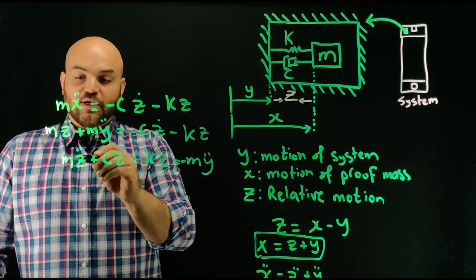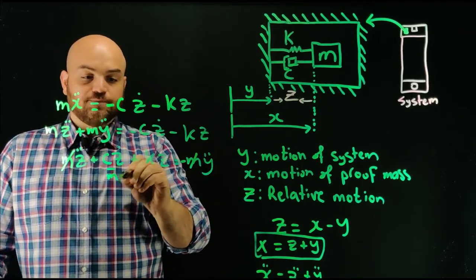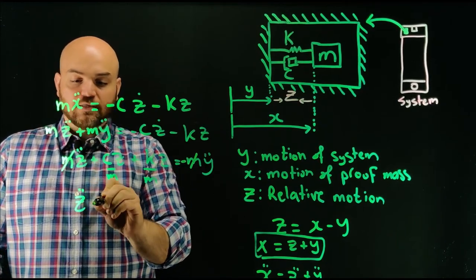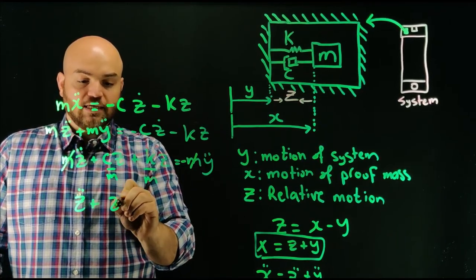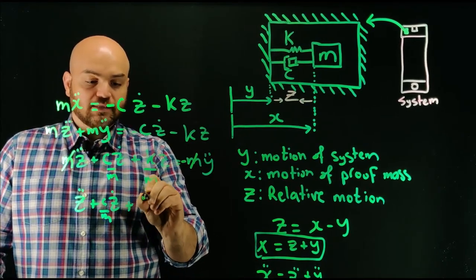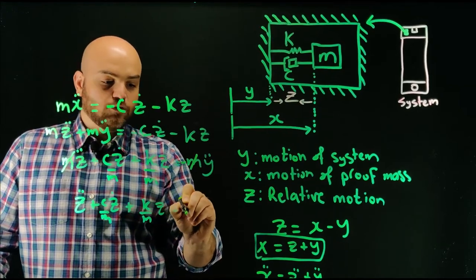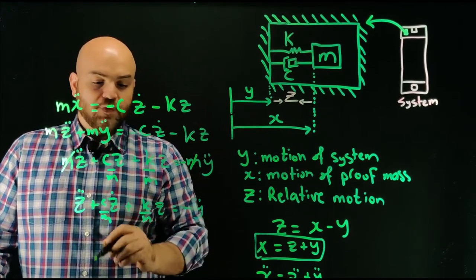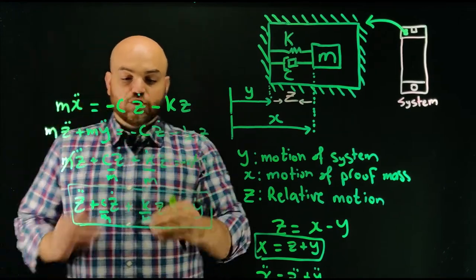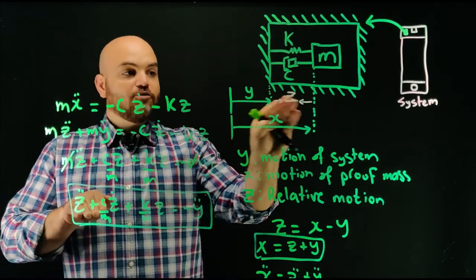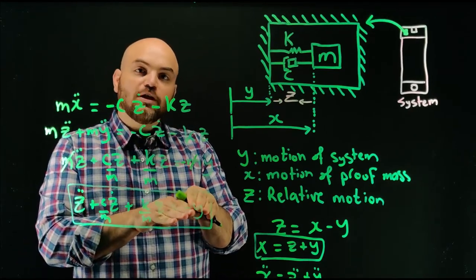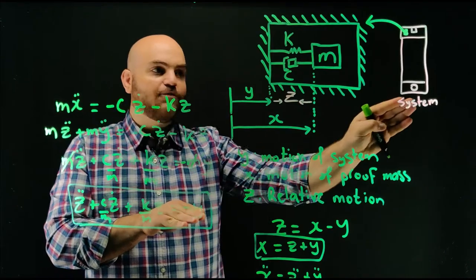Simplifying the equation by dividing by mass gives: Z̈ + (C/M)·Ż + (K/M)·Z = −Ÿ. This is a second-order differential equation that describes the relative motion of the mass inside the accelerometer as a function of the acceleration of the system body — the cell phone.